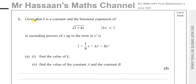Given that k is a constant and that the binomial expansion of the square root of 1 plus kx, where the magnitude of kx is less than 1, in ascending powers of x up to the term in x cubed is 1 plus 1 over 8x plus ax squared plus bx cubed. Part a, part 1: find the value of k. Part 2: find the value of the constant a and the constant b. This is all about binomial expansion.